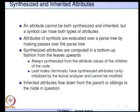The attributes of symbols are evaluated over a parse tree by making passes over it. It is possible to have more than one pass, and in each pass there would be at least one attribute computed at the nodes. Synthesized attributes are computed in a bottom-up fashion from the leaves upwards — they are synthesized from the attribute values of the children. Leaf nodes, that is the terminals, have only synthesized attributes, initialized by the lexical analyzer and cannot be modified.